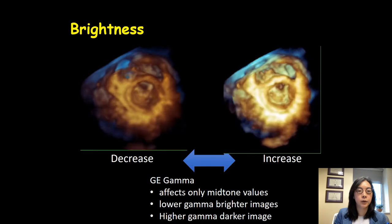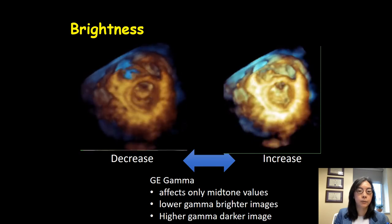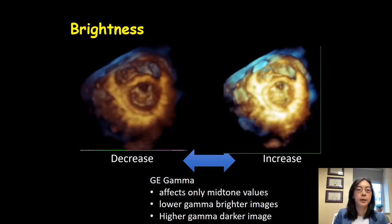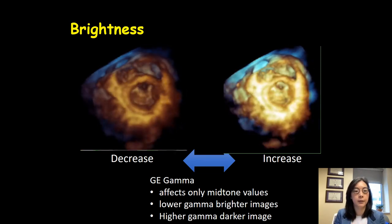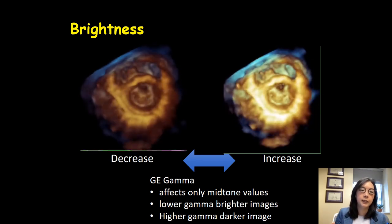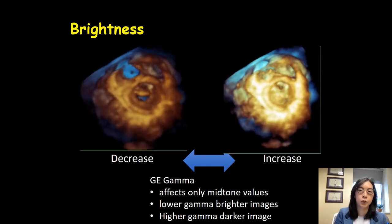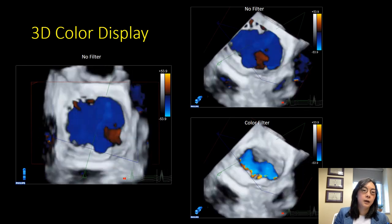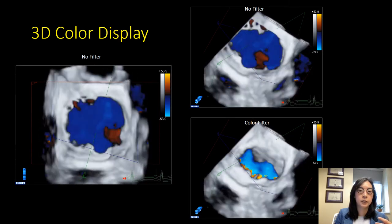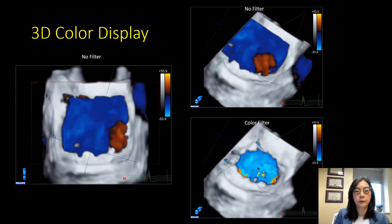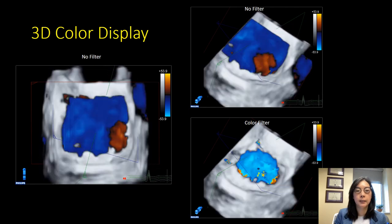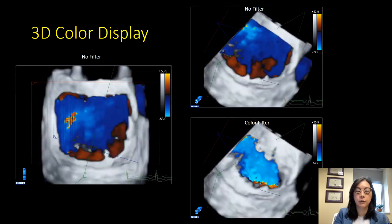Brightness is the last rendering tool to adjust. Think of it as a flashlight: if it's too bright it whites out your structures and you lose 3D depth; if it's too dark you also lose 3D depth. You want to increase it just enough to improve the 3D quality of your picture. For color, a quick tool I like is changing the color filter. Increasing the color filter lets you see the main jet while losing the smaller jets, which allows you to quickly see where jets are coming from during a procedure, though you need to be aware that smaller jets may be lost.